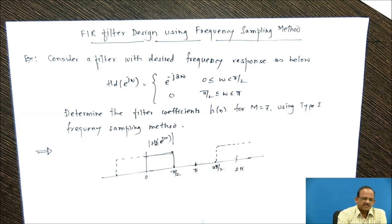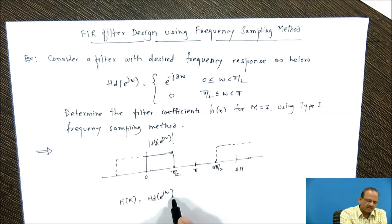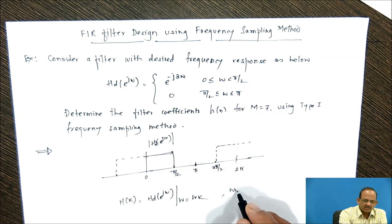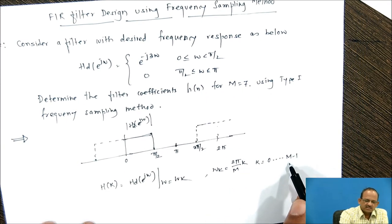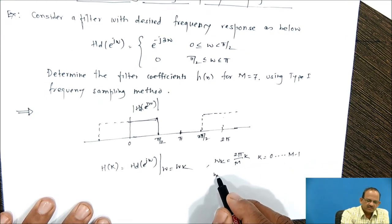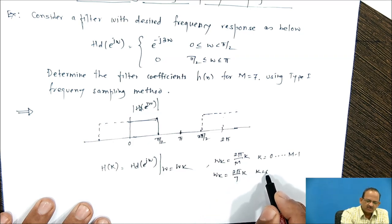To design using the frequency sampling method, we obtain the DFT coefficients by sampling H_d(e^{jω}) over the range 0 to 2π. So H(k) is obtained by evaluating H_d(e^{jω}) at ω = ω_k, where ω_k = (2π/M)·k, for k = 0 to M−1. In this case, M = 7, so ω_k = (2π/7)·k, for k = 0 to 6.